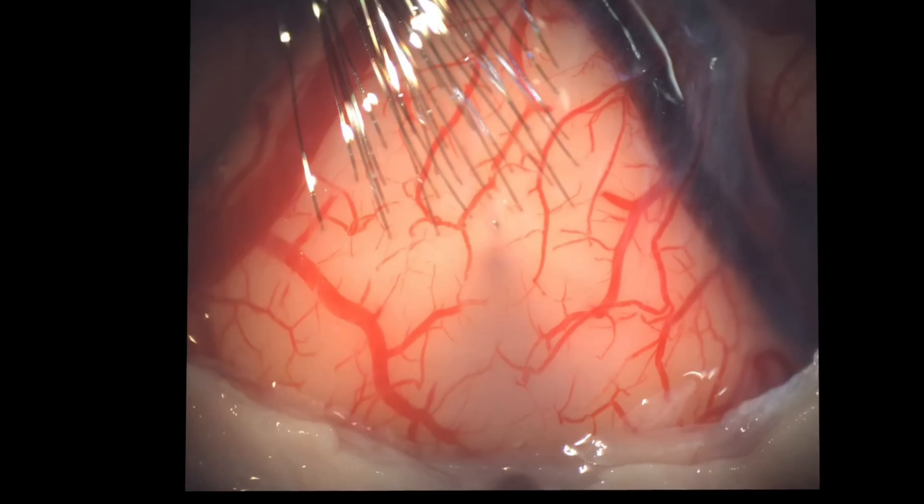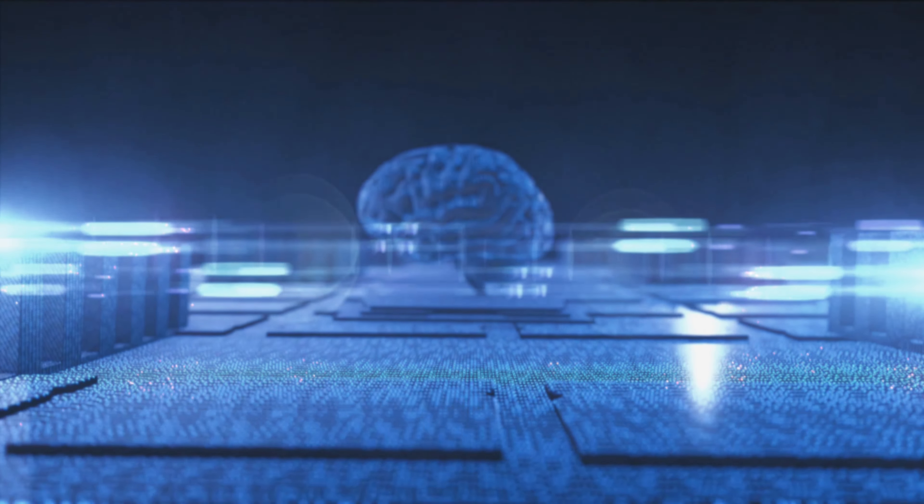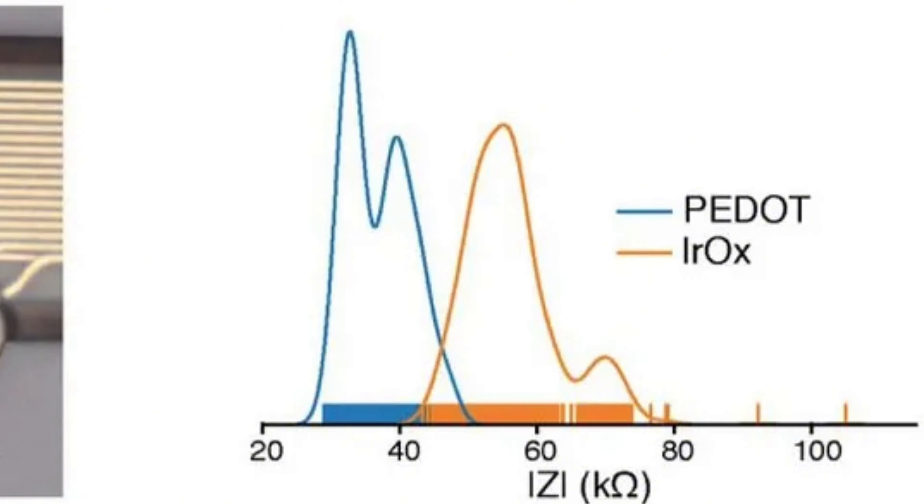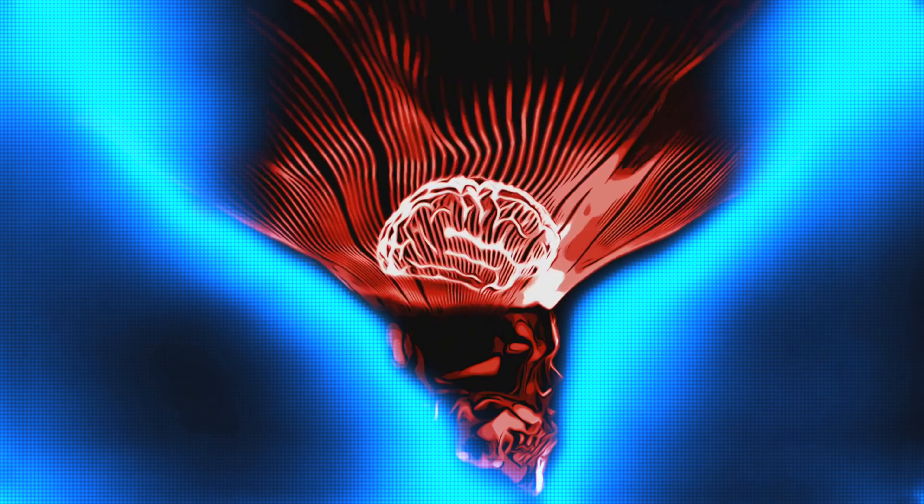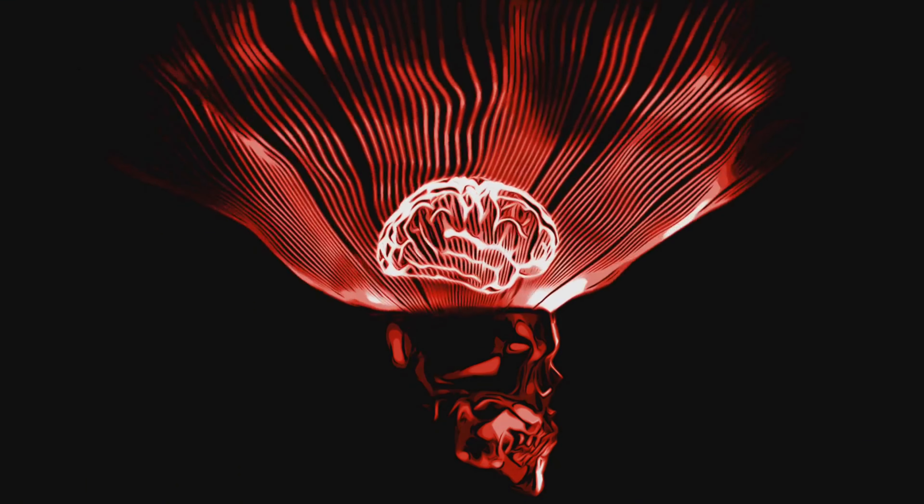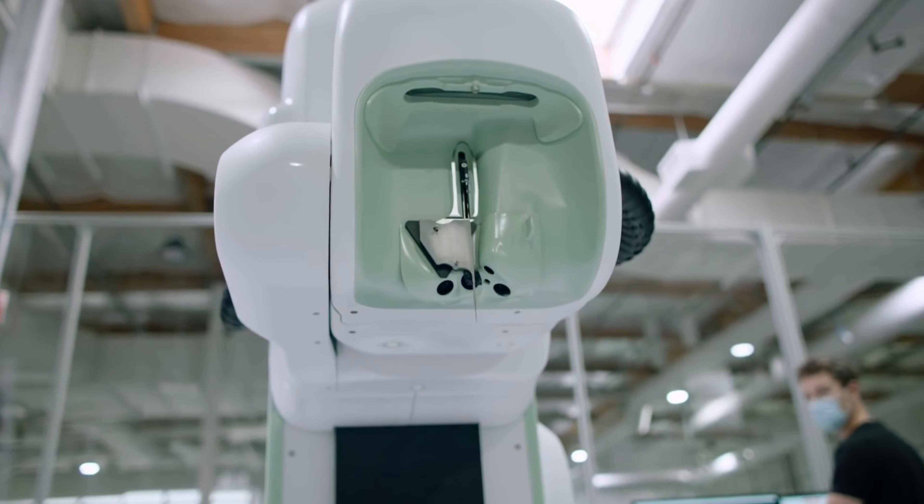These electrodes on the threads are treated with special materials to improve their performance. For example, coatings like PDOT, PSS, and iridium oxide are applied to lower their impedance, which is a way of making them more efficient at transmitting brain signals. This is crucial for the thread's ability to both read brain activity accurately and stimulate neurons when needed.